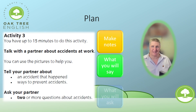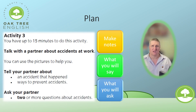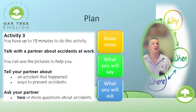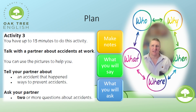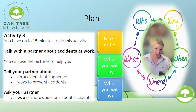If you get stuck and aren't sure what to write in your plan, go back to thinking about your question words: why, when, where, what, and who? If you answer all those, you can ask your interlocutor — that is, the person you are speaking to — what their experience or opinion is.